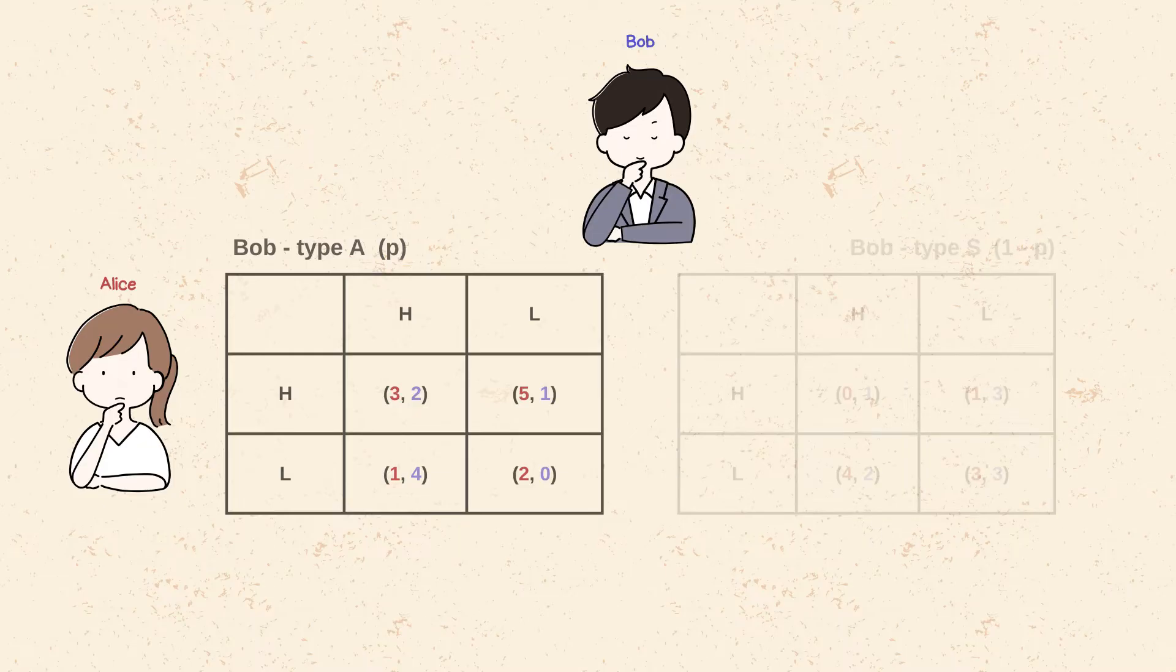If Alice knows that Bob is of type A, then bidding high is her dominant strategy, since her payoffs are bigger than the low ones, regardless of whether Bob chooses to bid high or low.